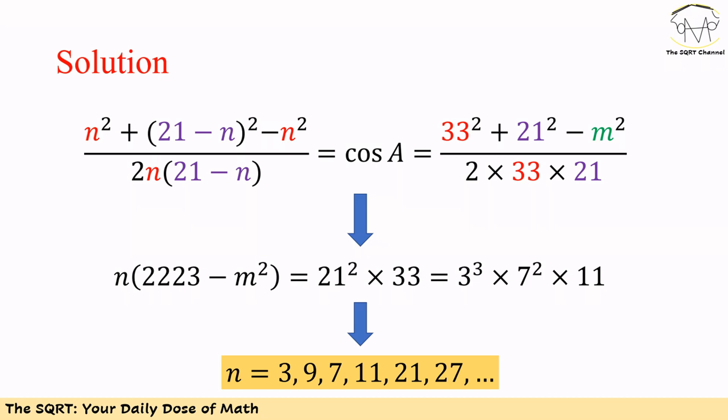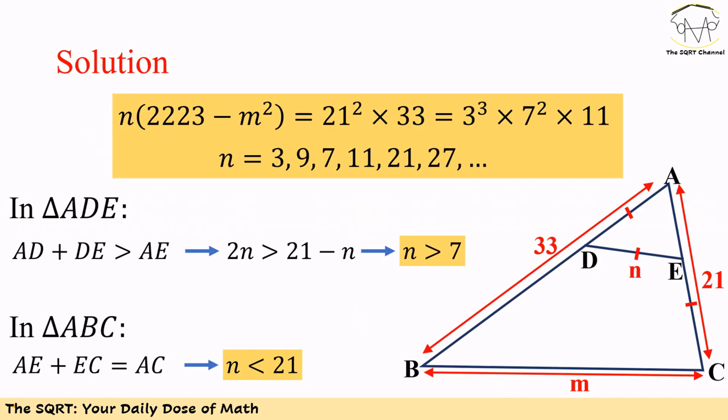Which one of these are acceptable? To understand which one of these are acceptable, we are going to use the problem that we have again. As you can see here, in triangle ADE, AD plus DE should be greater than AE.